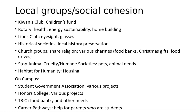There are a lot of local groups that help develop social cohesion in our own region. I've stayed general here because our service area is large, and you can look for any of these organizations in your communities. Kiwanis Club generally helps with children's funds. Rotary focuses on health, energy sustainability, and home building. Lions Club focuses on improvement for eyesight and glasses for people in need. Historical societies provide local history preservation. Church groups share religion and various charities like food banks, Christmas gifts, and food drives. Stop Animal Cruelty and humane societies help with pet and animal needs. And Habitat for Humanity focuses on housing — these groups are always looking for members or volunteers.